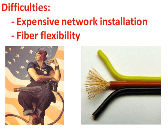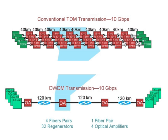Here's an example of conventional fiber optics time division multiplexing versus the newer generation fiber optics DWDM. TDM is a single wavelength fiber with multiple channels per fiber, while DWDM has multiple wavelengths per fiber with multiple channels per fiber. Notice how both transmissions have the same speed of 10 gigabits per second, but DWDM only requires one fiber pair with four optical amplifiers, while TDM requires four fiber pairs with 32 regenerators.